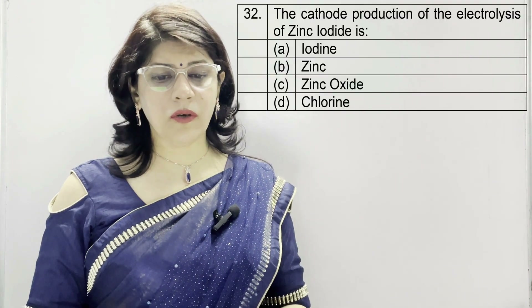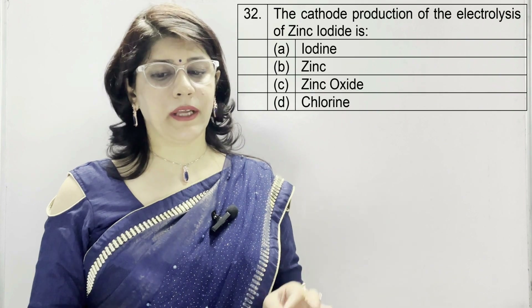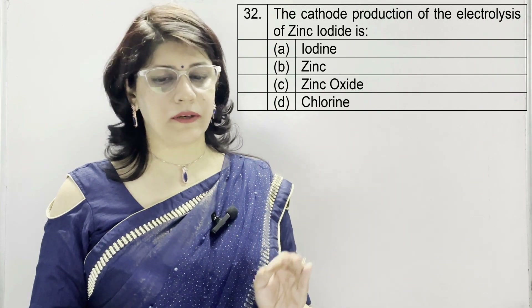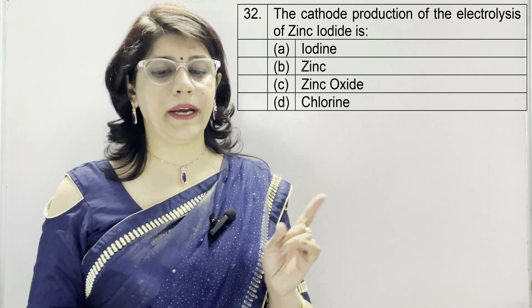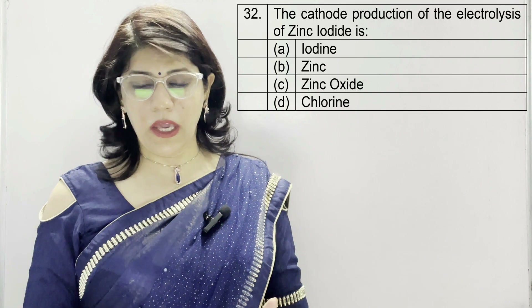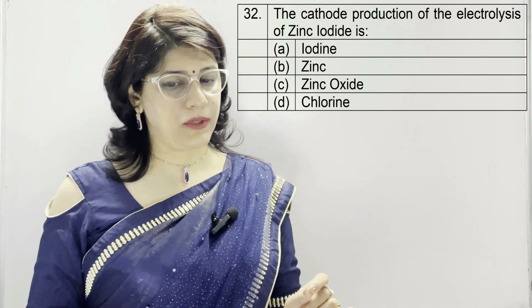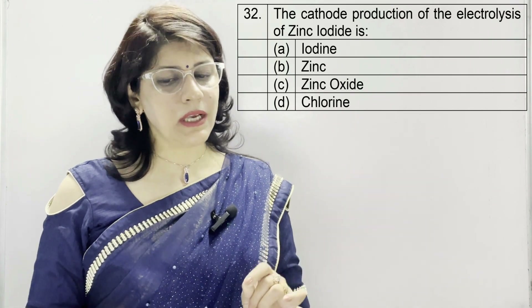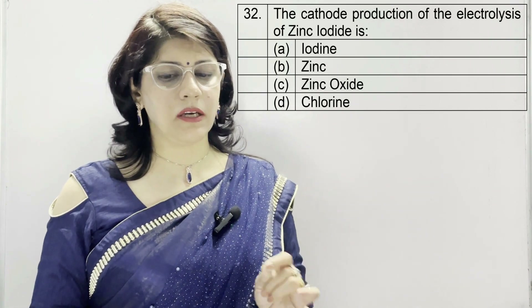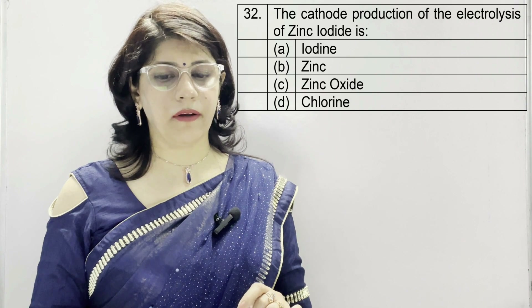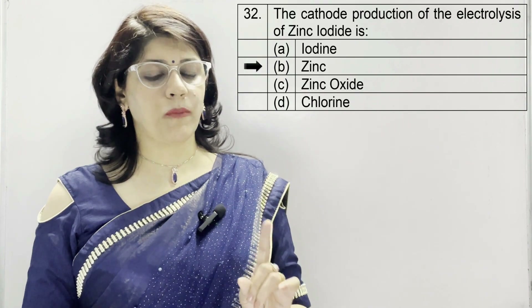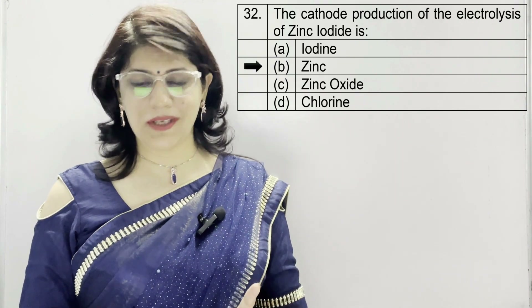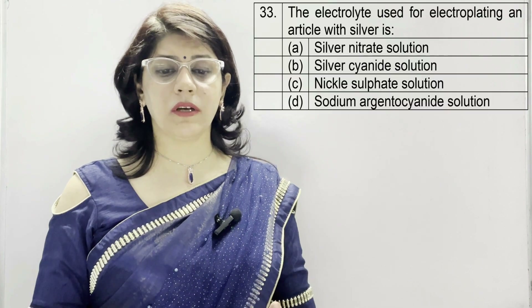Question number 32: the cathode product of the electrolysis of zinc iodide is — A: iodine, B: zinc, C: zinc oxide, D: chlorine. Which is the metal among these? Zinc. The correct option is B — zinc.